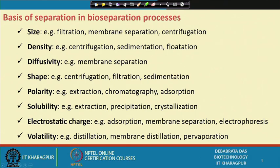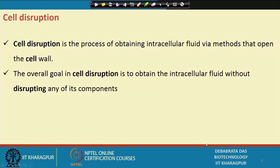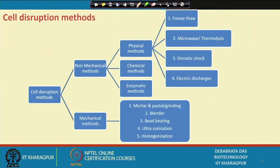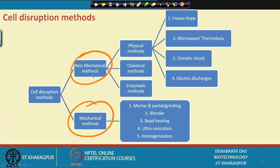Regarding cell disruption, the main goal is to release the intracellular fluid without disrupting any component present inside the cell. Cell disruption processes can be divided into two types: non-mechanical methods and mechanical methods. Non-mechanical methods include physical methods, chemical methods, and enzymatic methods.